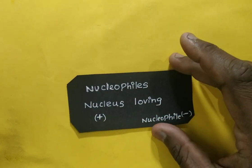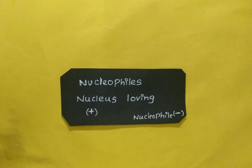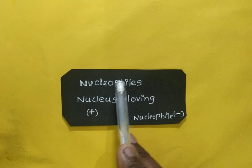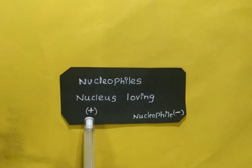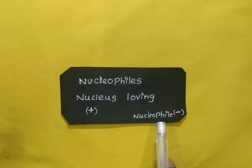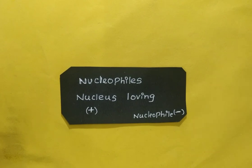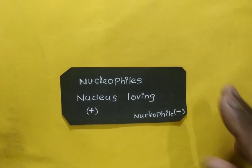The first one is nucleophile. The word 'nucleo' indicates nucleus, and 'phile' means loving — so nucleophile means nucleus-loving. As we know, the nucleus always has a positive charge, so our nucleus-loving group should have a negative charge. Nucleophiles may have a negative charge, and some neutral nucleophiles are also available.